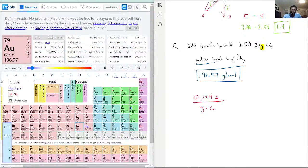Now we want to cancel out the grams. Grams need to go on top, so we have 196.97 grams per mole. These two cancel out, and if we multiply 0.129 times 196.97...